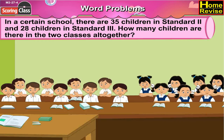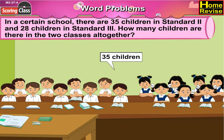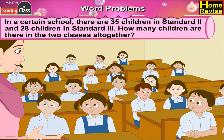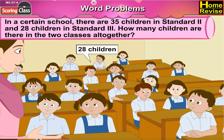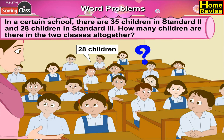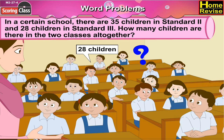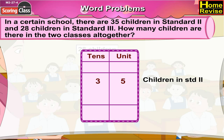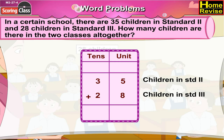In a certain school, there are 35 children in standard 2nd and 28 children in standard 3rd. How many children are there in the two classes altogether? The number of children in standard 2 are 35 and in standard 3 are 28.